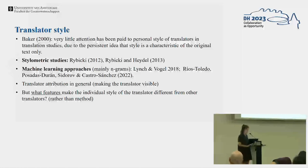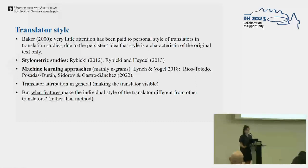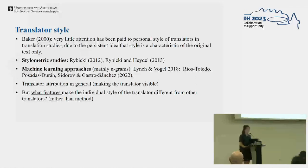I'll say a bit more about that in a minute. Recently there have been some studies using machine learning approaches, mainly looking at n-grams, that have been somewhat successful. But all of these studies are mainly about translator attribution — how we can use these methods to distinguish between translators — but not so much about what actually makes the translators different from each other. And that's what I'm mostly interested in. What features make the individual style of a translator different from other translators? Rather than the method, I'm focusing on the individual differences.